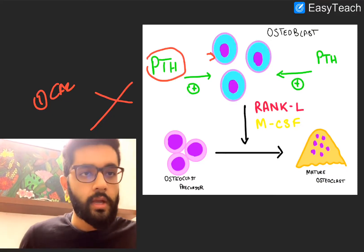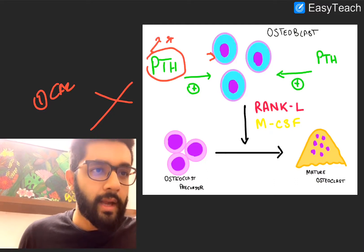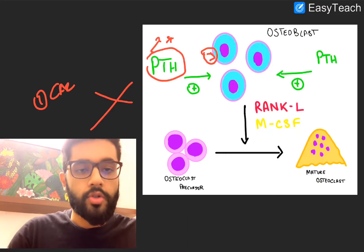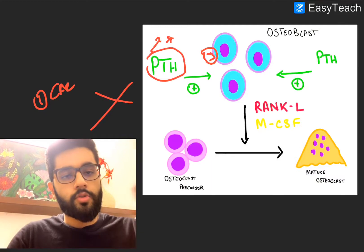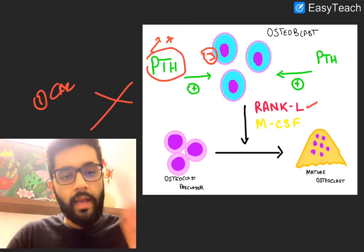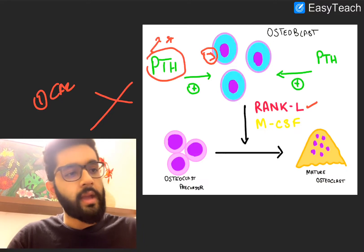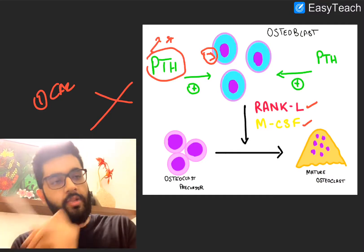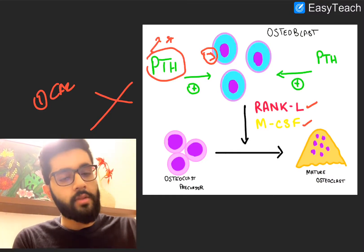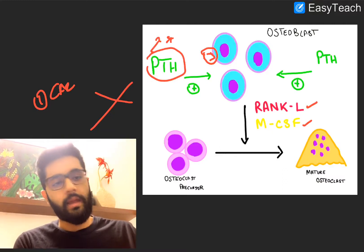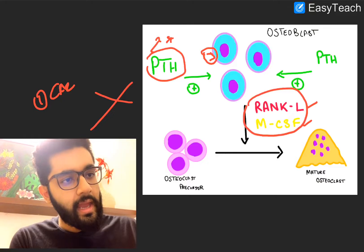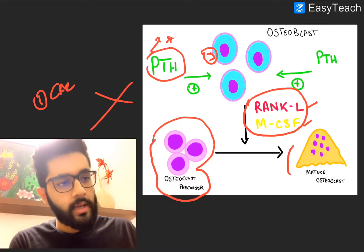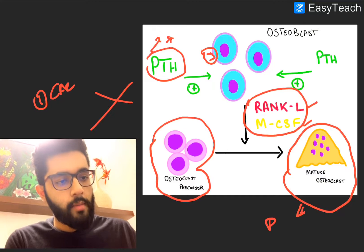Parathyroid hormone binds to the PTH receptors on the osteoblasts and stimulates these osteoblasts to produce two things: one is called RANK ligand, and the second is MCSF, which is the macrophage colony stimulating factor. So PTH acts on the osteoblasts and these osteoblasts produce RANK-L and MCSF, and it is this RANK-L and MCSF that stimulates the conversion of precursor or stem cell osteoclasts into mature osteoclasts that can bring about bone resorption.